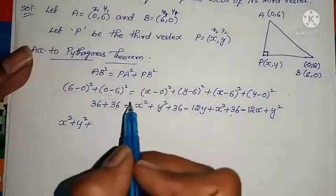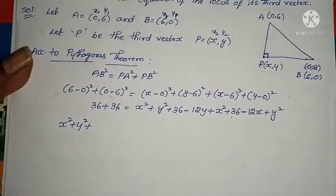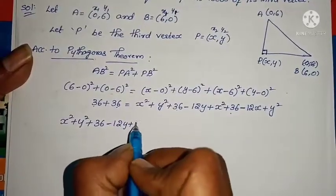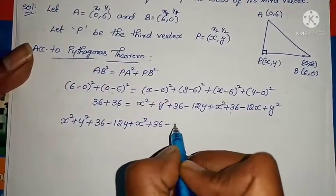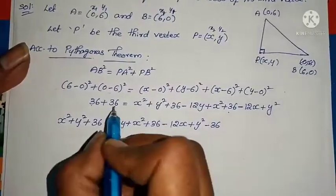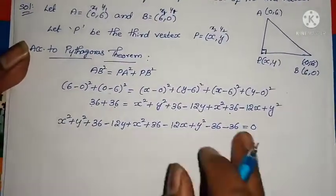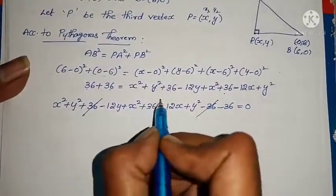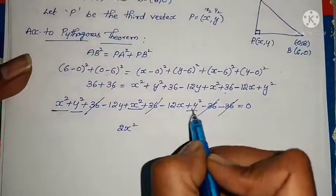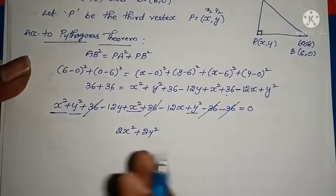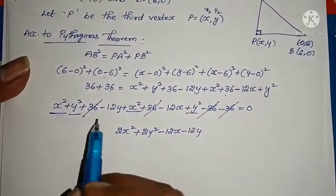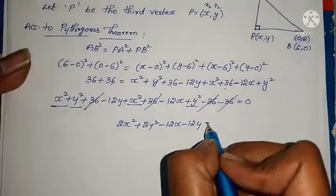Combining: x² + x² = 2x², y² + y² = 2y². The y-terms give -12y, the x-terms give -12x. Constants: +36 + 36 on both sides cancel out. No remaining constant. So we have 2x² + 2y² - 12x - 12y = 0.